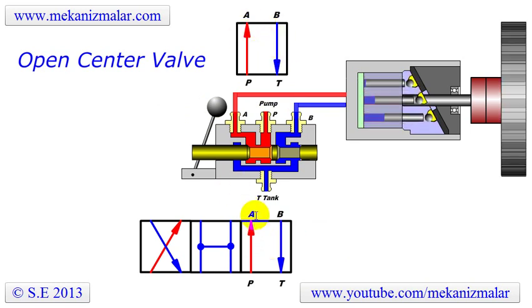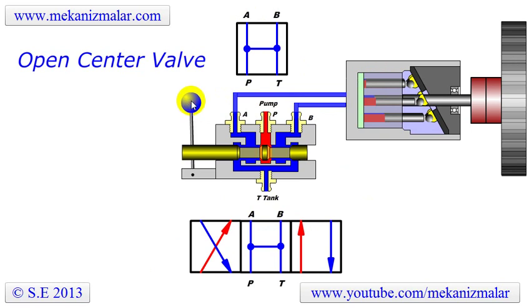Note that in this case the rotation direction of the motor is reversed. The corresponding flow diagram representing the extreme right position is shown by a square diagram at the top. In the center position of the valve, all ports are connected to the tank port T, which relieves the pressure from ports A and B.